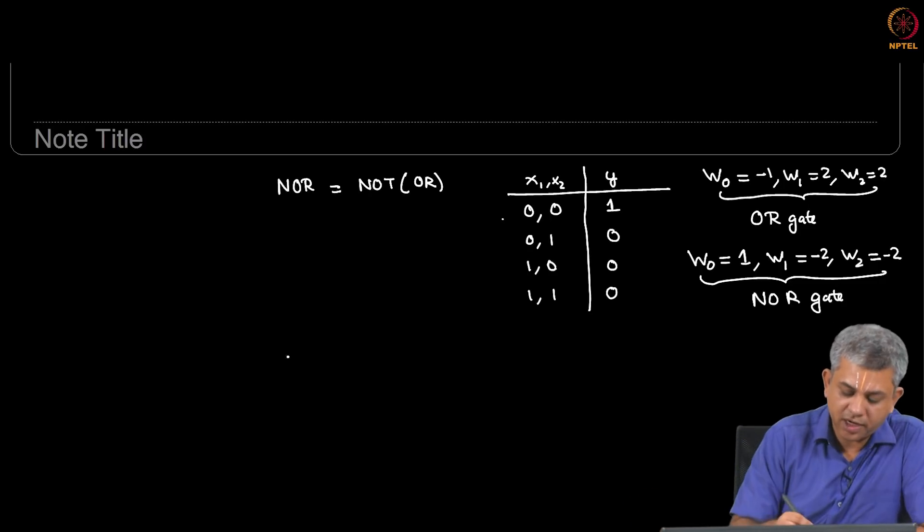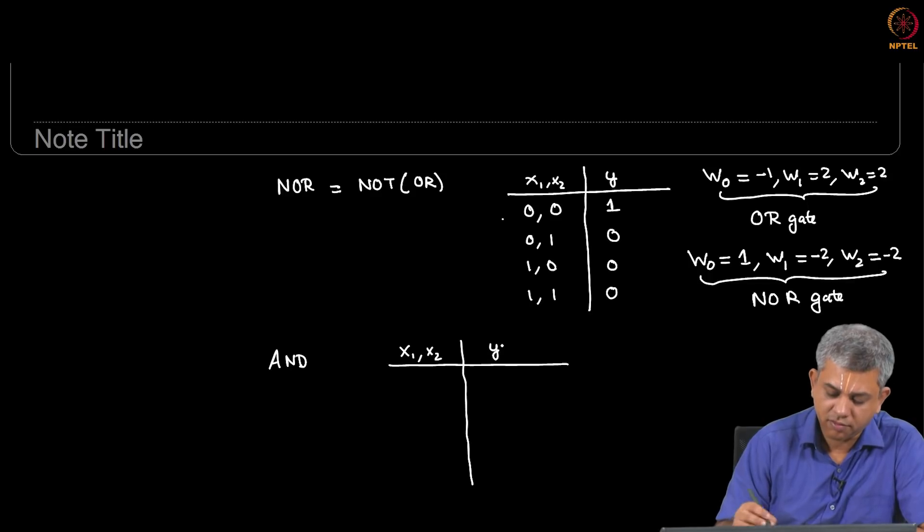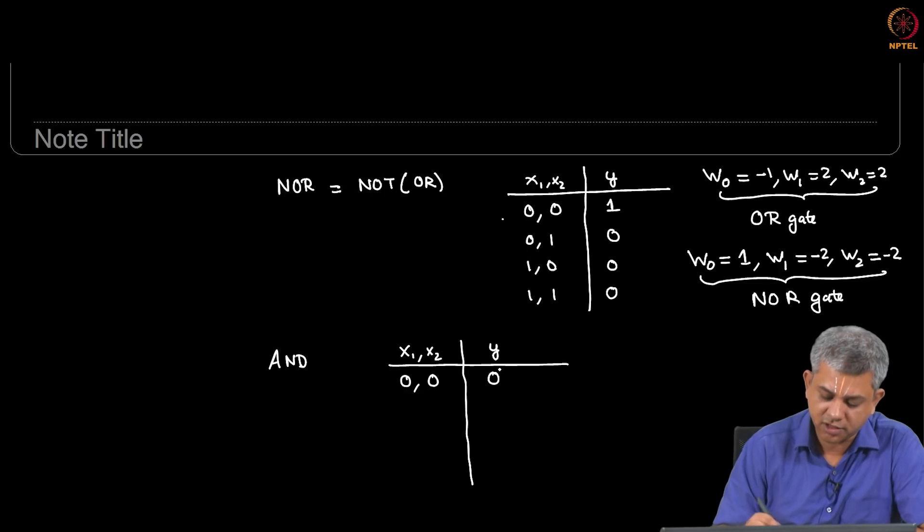You can similarly check how the AND gate works. I will write the truth table. This works only if both of these are nonzero.